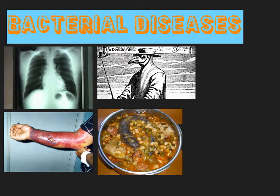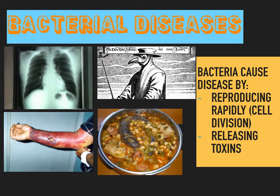And finally the big one — the Black Death. In the 14th century the Black Death is estimated to have killed somewhere between 50 and 60% of the population of Europe. With bacteria, the way they cause disease is through rapidly reproducing and creating copies of the cells through cell division, and also by releasing toxins — substances which are poisonous to the host cells within your body.